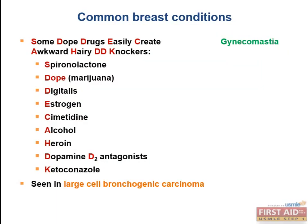The USMLE is obsessed with paraneoplastic effects of lung cancers. With small cell carcinoma, you might get ectopic ACTH or ADH secretion. With squamous cell carcinoma, you might get PTH-like peptide secretion. With large cell carcinoma, you can get a hyperestrogenic state and subsequent gynecomastia. So if you see gynecomastia in a patient with lung cancer, the diagnosis is large cell carcinoma.